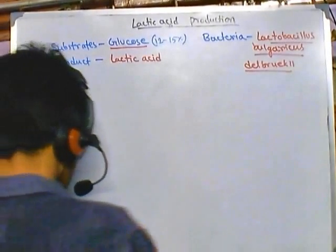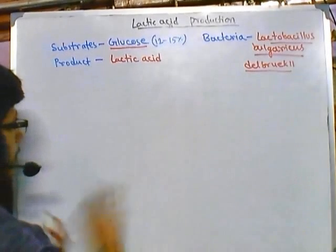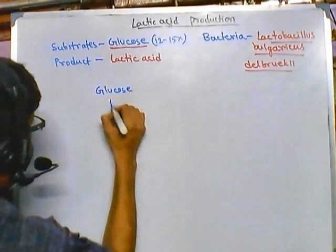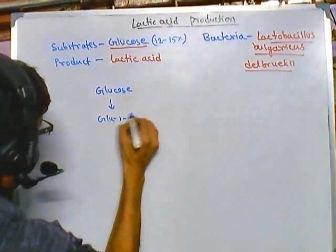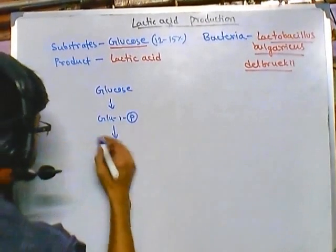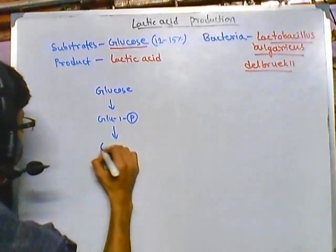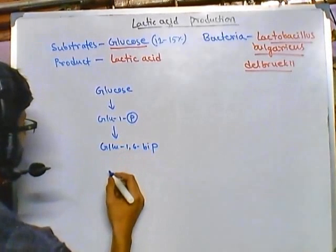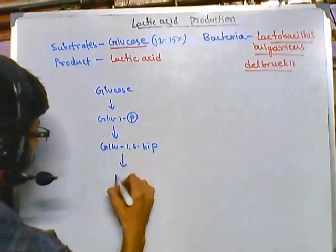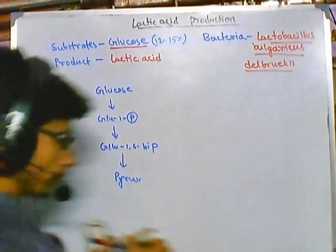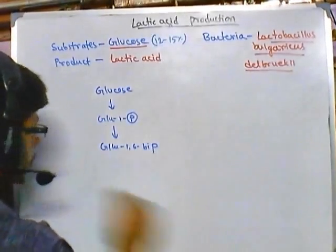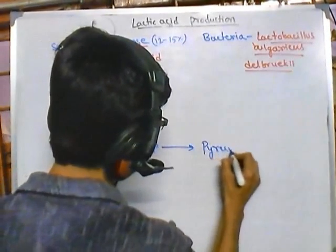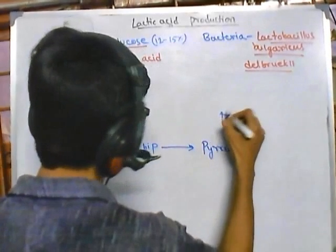Now let's talk about the biochemistry. We have glucose here, and it is converted into glucose-1-phosphate. Glucose-1-phosphate is then converted into glucose-1,6-bisphosphate, and finally it is converted into pyruvate. I'm not going to write all the sequential stages, but finally it converts into pyruvate, and then the pyruvate is converted into lactic acid.